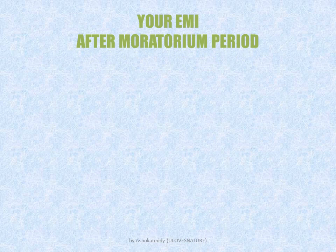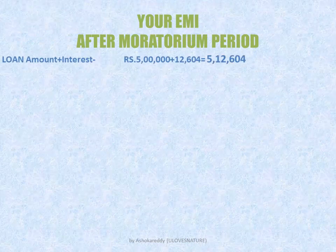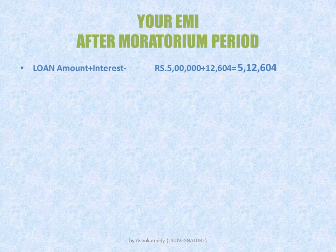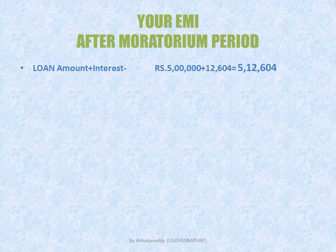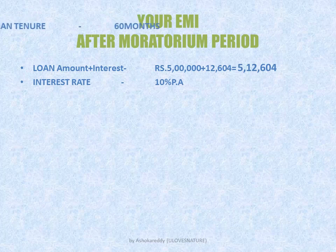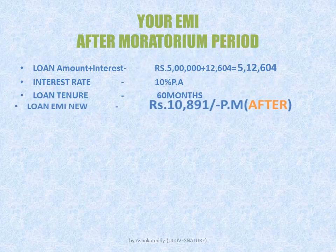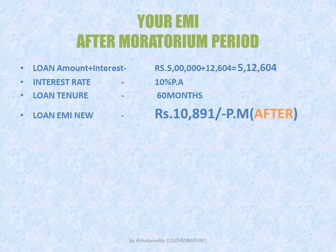Now we will calculate your EMI after the moratorium period. Your loan amount is Rs. 5 lakh plus the interest accrued for 3 months, which is Rs. 12,604, equal to Rs. 5,12,604. That is your loan outstanding after the moratorium period. With the same interest rate of 10% per annum and a loan tenure of 60 months, your new loan EMI will be Rs. 10,891 per month.